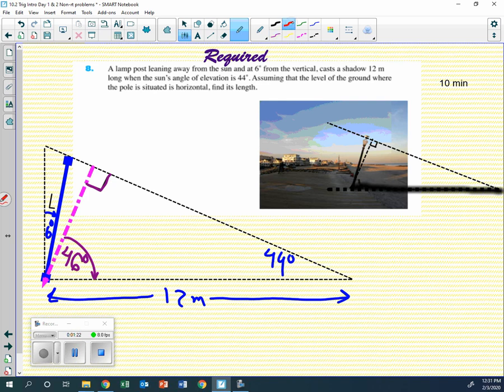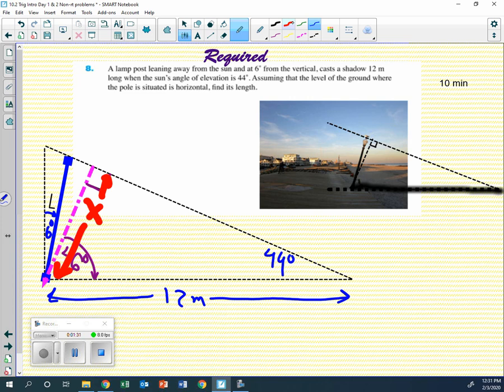Let's find out what this length here is. From here up to here. So I'm going to draw a little separate triangle, and it's going to be here.